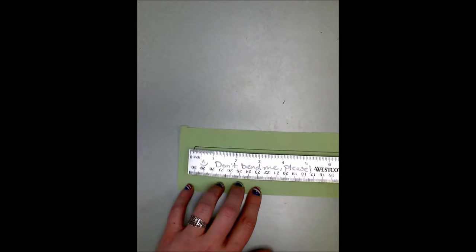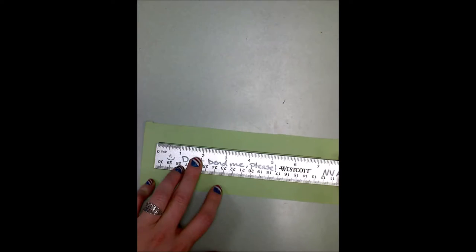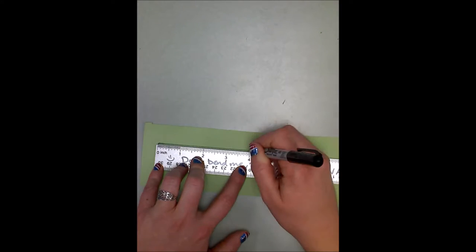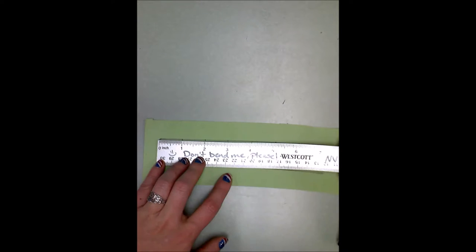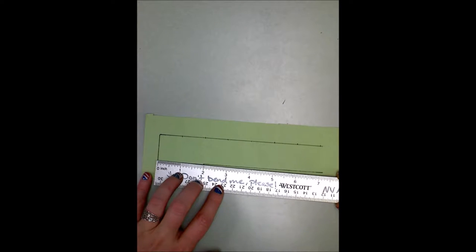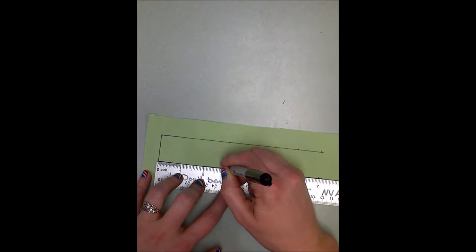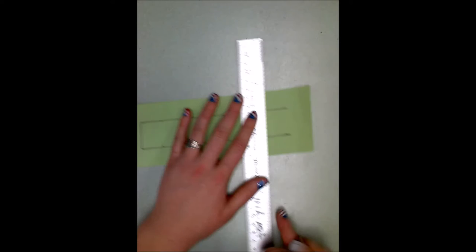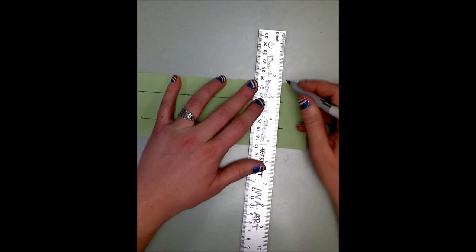I'm going to take and put the zero right on the edge there and then I'm going to make a little mark at each of the inches, each of the inch marks. I'll do the same thing, move it down here and make a mark at each of the inch marks. Make a little tally.